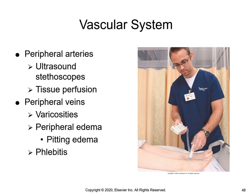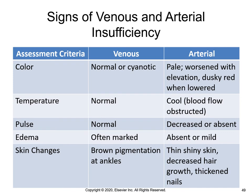Table 30.25 in your textbook describes the various signs of either venous or arterial insufficiency. Note the changes between color, temperature, pulse, edema, and skin changes. This indicates to the nurse whether it is a venous insufficiency or an arterial insufficiency. Remember, the venous system returns blood to the heart, while the arterial system takes blood to the periphery, away from the heart.